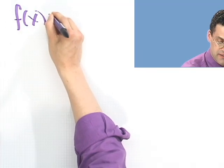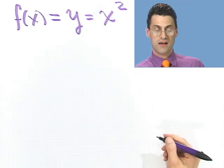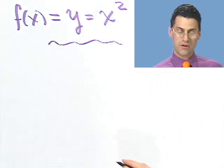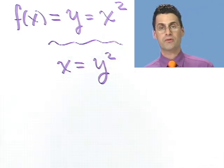So f of x, but again I'm going to write that just temporarily as y equals x squared. So what do you do for the inverse? You just switch the roles. So x equals y squared, and now you want to solve for y.